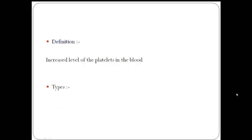The types of thrombocytosis: we have two types. One is reactive thrombocytosis, which is caused by underlying conditions in the body such as an infection. The second one is essential thrombocytosis, which is mainly related to blood and bone marrow disorders.